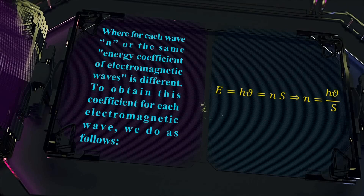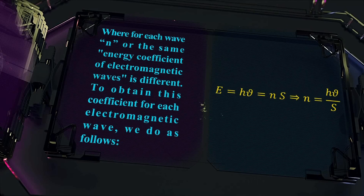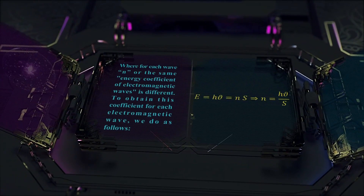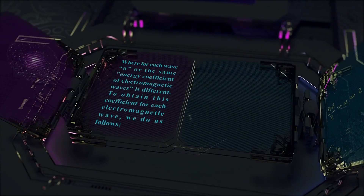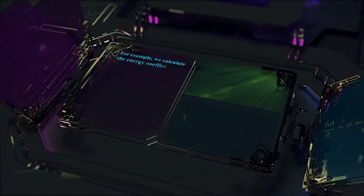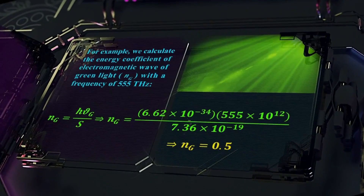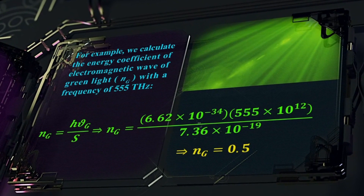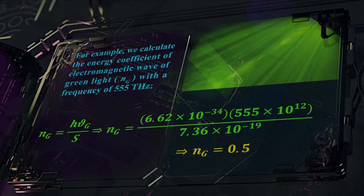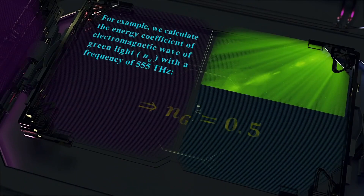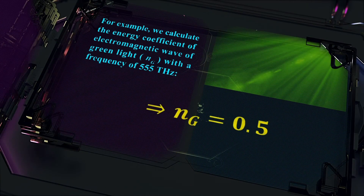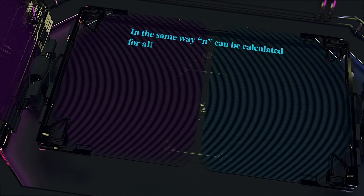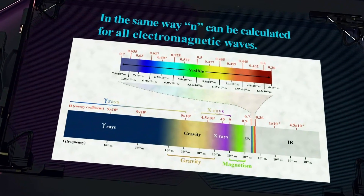To obtain this coefficient for each electromagnetic wave, we do as follows. For example, we calculate the energy coefficient of the electromagnetic wave of green light, n of g, with a frequency of 555 Terahertz. In the same way, n can be calculated for all electromagnetic waves.